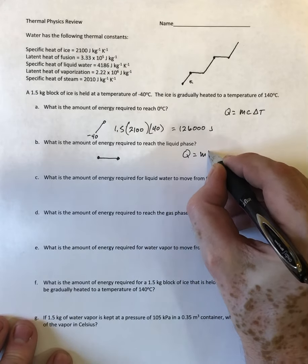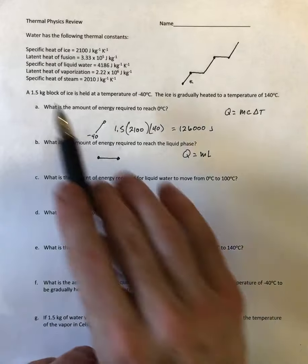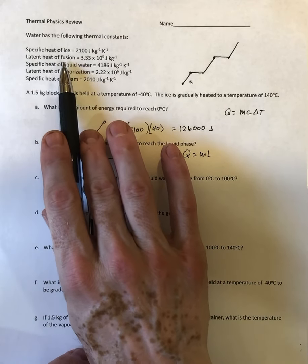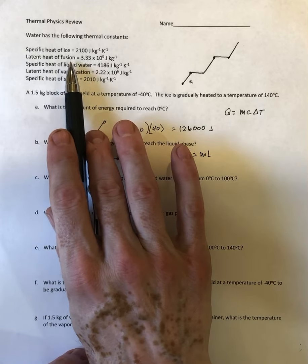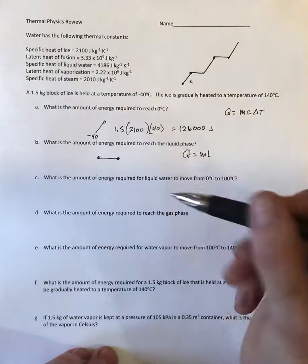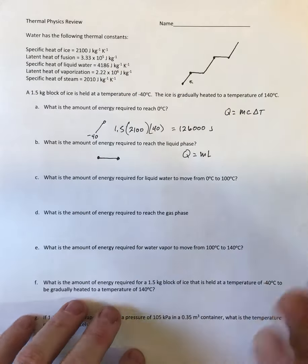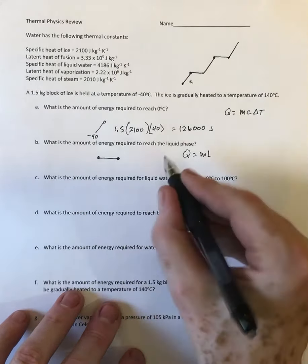Latent heat of fusion is the amount of energy required for something to either turn into a liquid or go from a liquid to a solid. This is 3.33 times 10 to the fifth joules per kilogram, and that's again for water only.